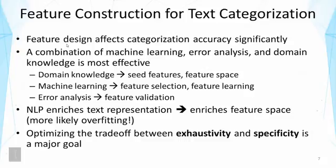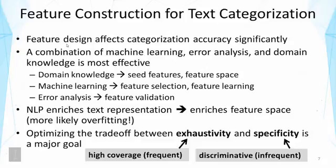A main common challenge in designing features is to optimize the trade-off between exhaustivity and specificity. Exhaustivity means the features have high coverage over many documents, so you want features to be frequent. Specificity requires features to be discriminative, which naturally favors infrequent features. This trade-off between frequent and infrequent features is what makes feature design generally hard, and it is perhaps the most important part of applying machine learning to text categorization or, more specifically, sentiment classification.